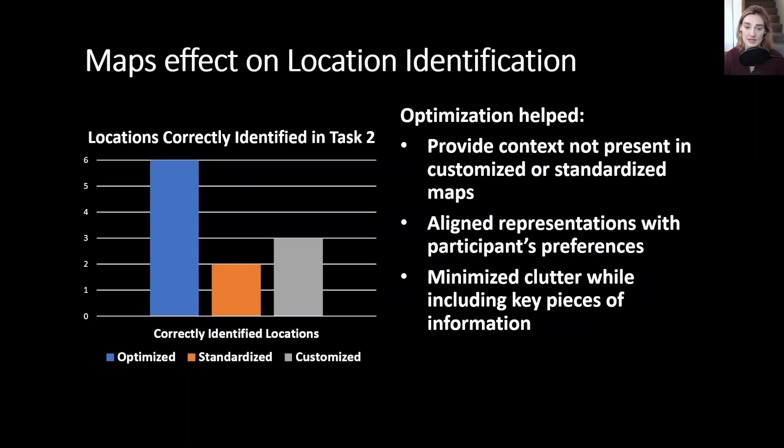In our second task, we found that the optimized maps outperformed the other types of maps in helping users identify locations quickly and accurately. All users were able to identify all of the locations with the optimized map. This was because the optimized map helped provide context that was not available in the standardized or customized maps. It also aligned representations with their preferences and minimized clutter, which was not true for the customized maps.